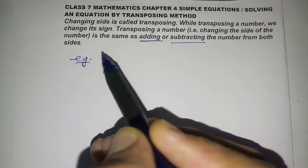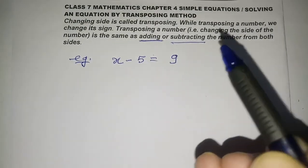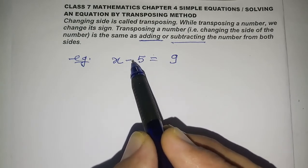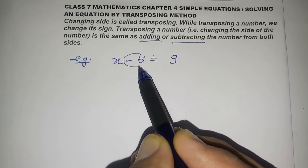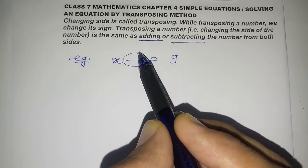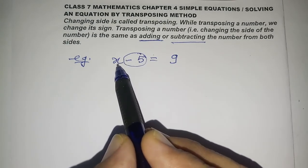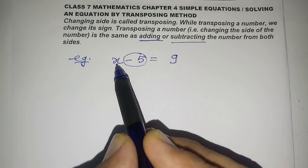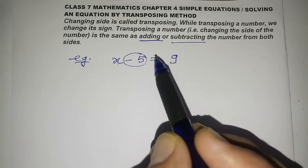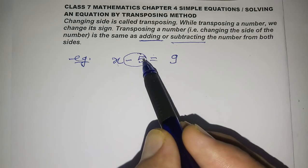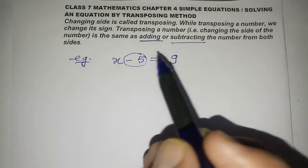Let us take the first example: x minus 5 equals 9. Here, minus 5 is on the left side. We don't need to add or subtract on both sides — instead, we will change the side of the number 5. We need only the variable on the left-hand side, so we will transpose minus 5 to the other side.